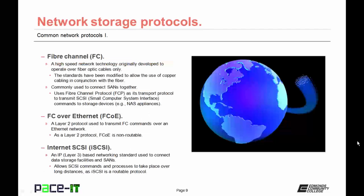Now let's move on to the protocols, starting with Fiber Channel. It's a high-speed network technology that was originally developed to operate over fiber-optic cables only. The standards have been modified to allow the use of copper cabling in conjunction with fiber-optic cables. It's commonly used to connect storage area networks together. Fiber Channel uses Fiber Channel Protocol, or FCP, as its transport layer protocol — its layer 4 protocol — to transmit SCSI (Small Computer System Interface) commands to storage devices, specifically to network-attached storage appliances.